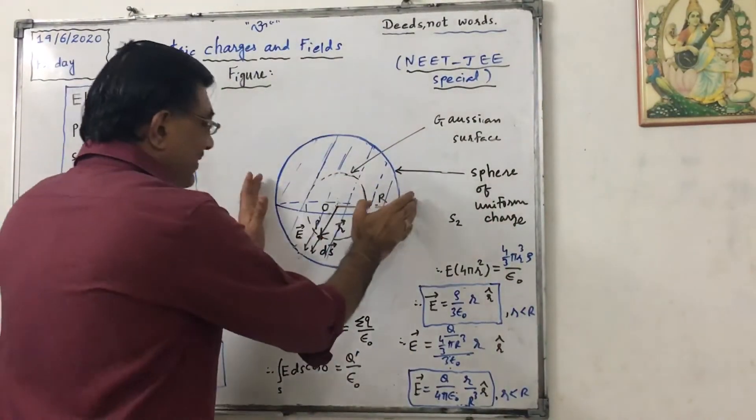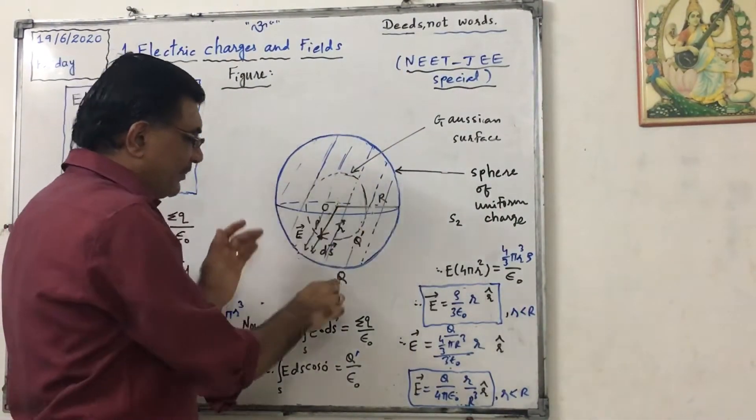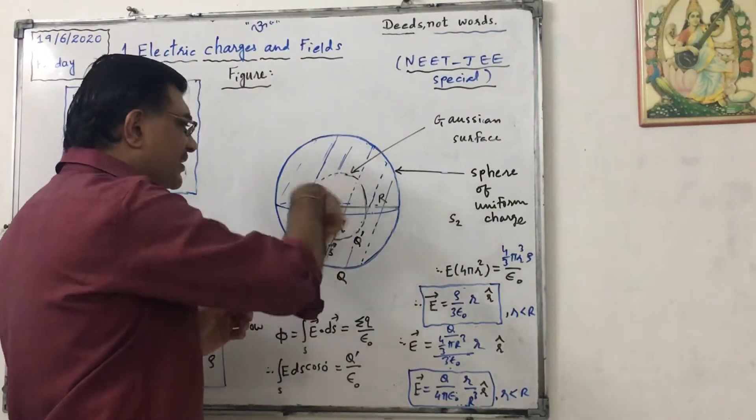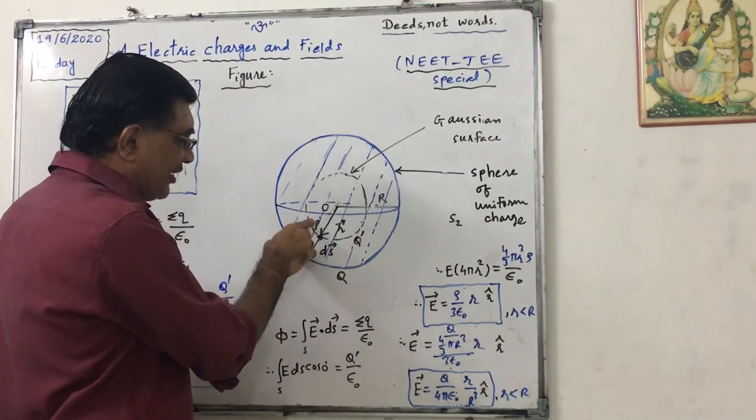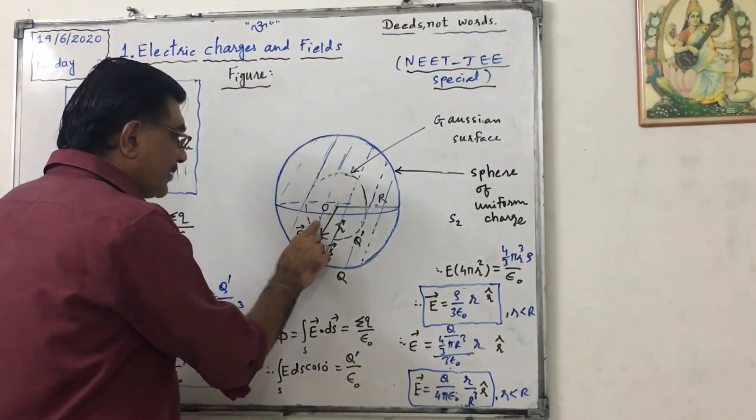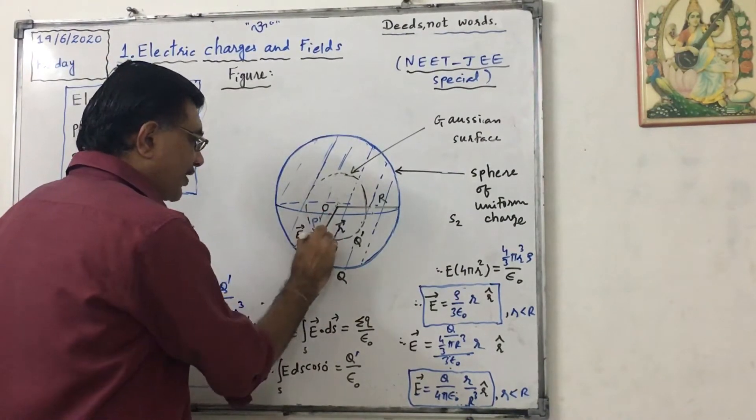So this is the sphere, having charge capital Q, radius capital R. The inside point I have considered as P, capital P, this is the point.